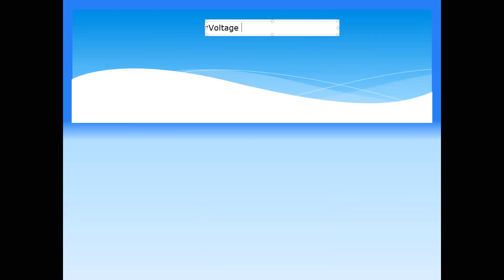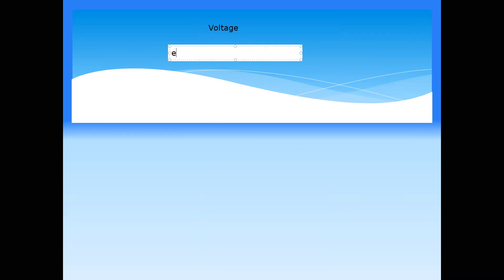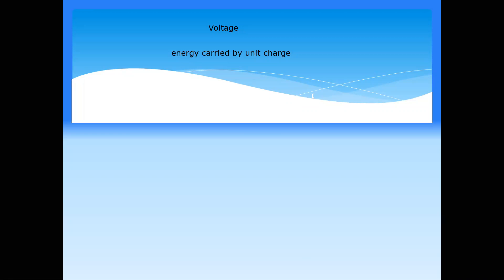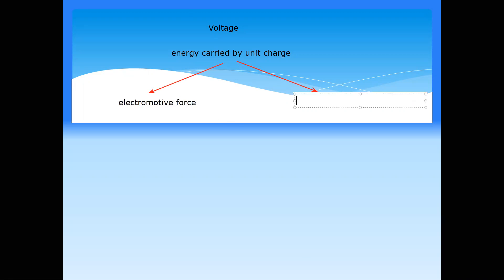Voltage is how much energy is carried by a unit charge. This voltage can be divided into two categories: it can be referred to as electromotive force, or it can be referred to as potential difference. Both are voltages, but there is a small difference between them.